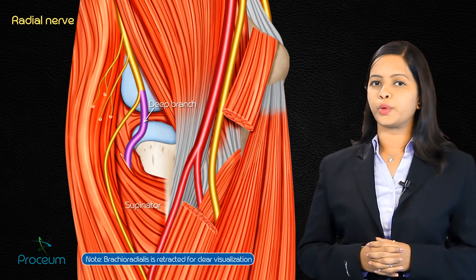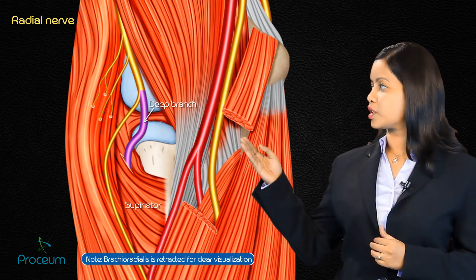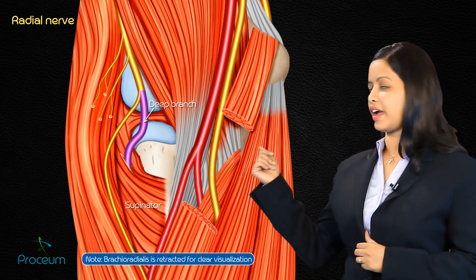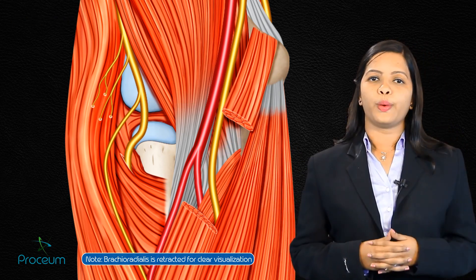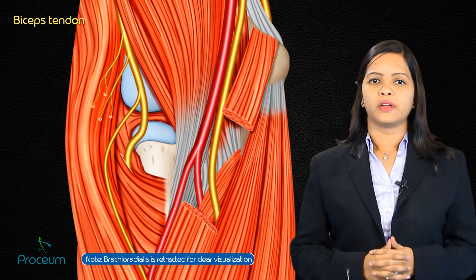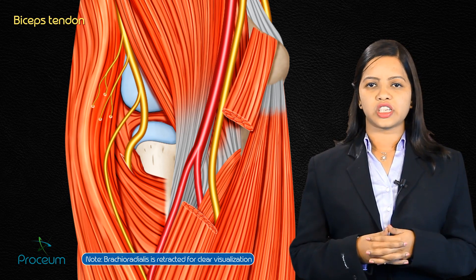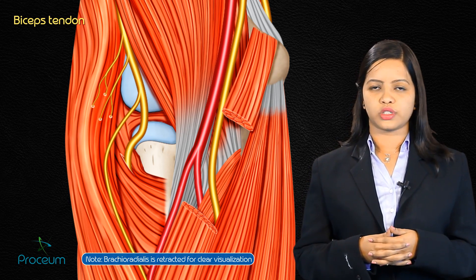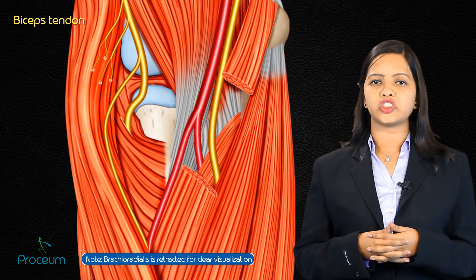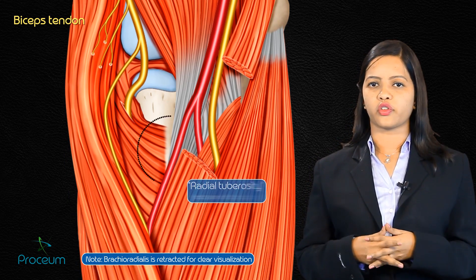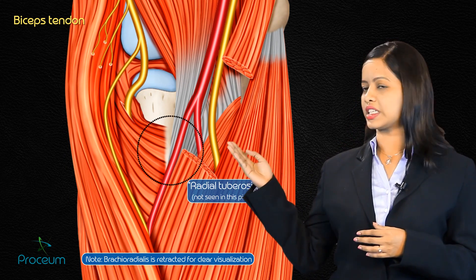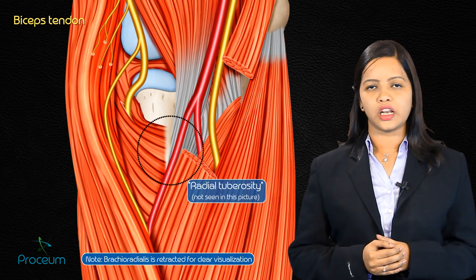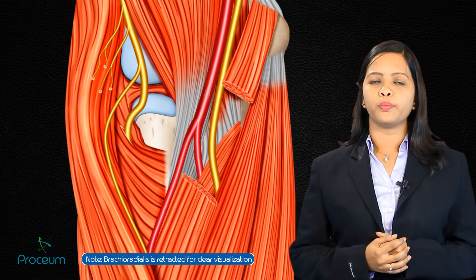The deep branch passes between the two heads of the supinator muscle to reach the posterior compartment of the forearm. The biceps tendon runs through the cubital fossa, attaching itself to the radial tuberosity along with the bicipital aponeurosis.